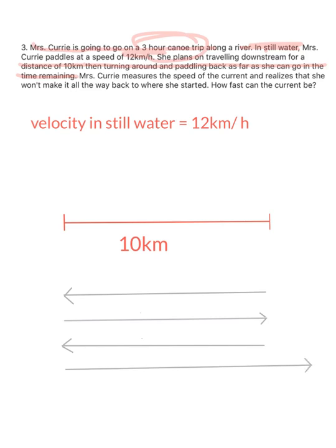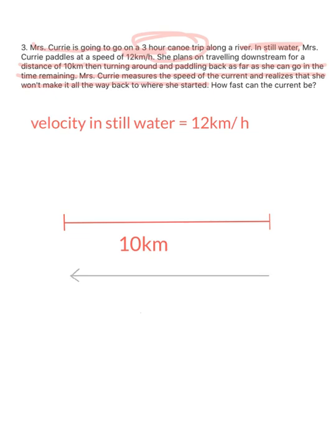What is the current? So she says she measures the speed of the current and realizes that she won't make it back all the way where she started. How fast is that current? How fast is the current so that when she paddles it takes her a certain amount of time to get to 10 kilometers and then after 3 hours she doesn't quite make it back. Right? Well it doesn't say doesn't quite, maybe she doesn't make it, maybe she's not even close. Right? So what are the different currents that will stop her from making it all the way back?